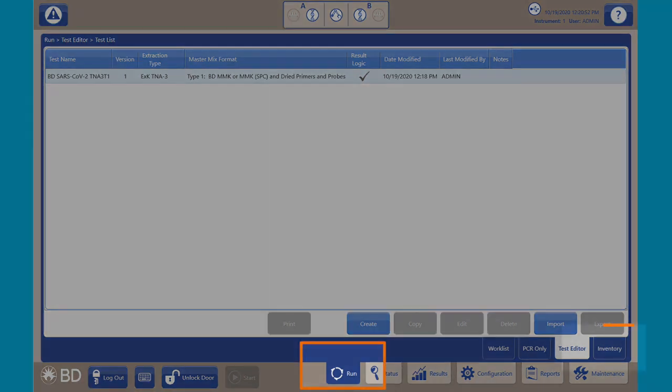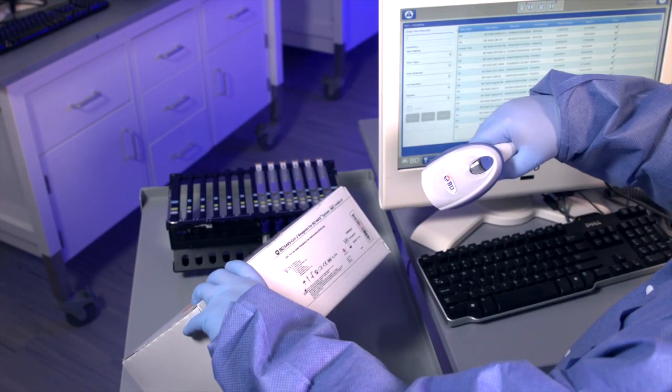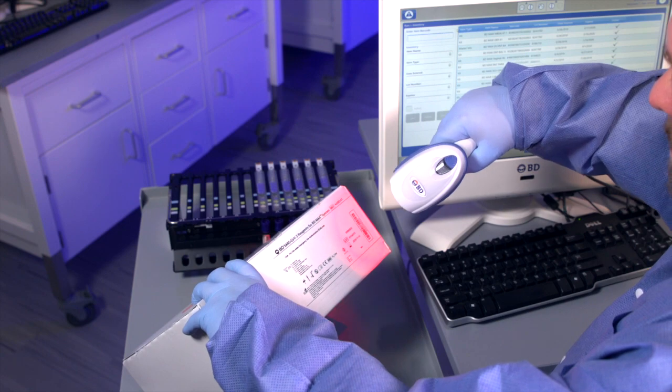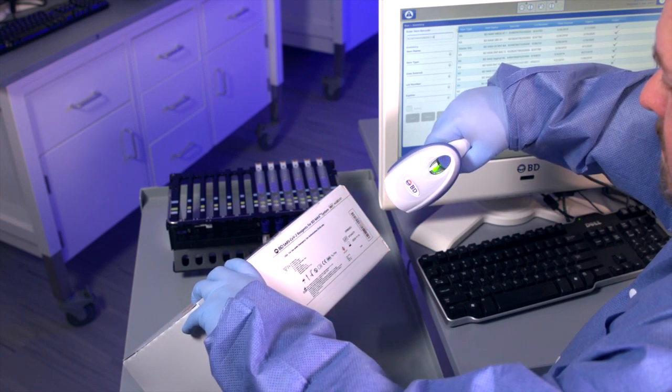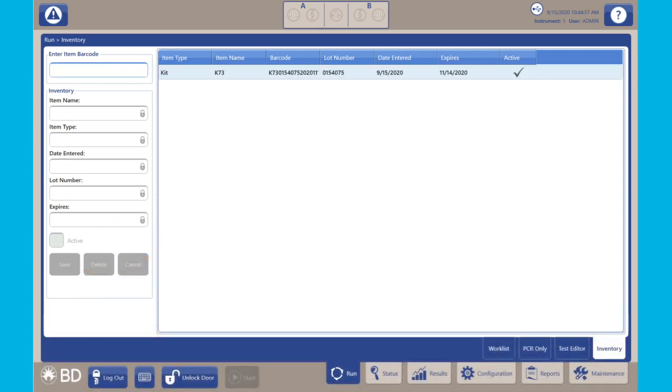Click on the Run tab, then Inventory. Enter the kit lot number for the BDSARS CoV-2 reagents for BDMAX System Kit by either scanning the barcode with the scanner, or by manual entry, and then Save. Repeat scanning or entering the barcode each time a new kit lot is used.